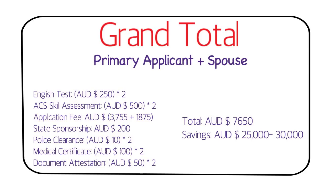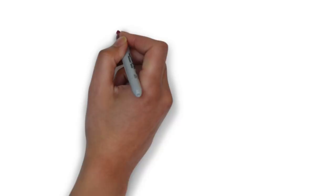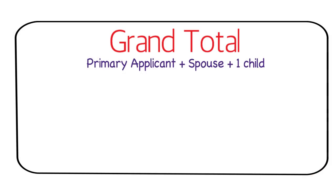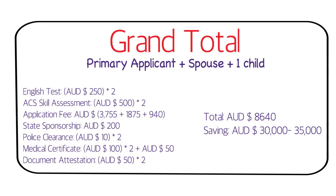If you are a primary applicant migrating with a spouse and one child, you would need to spend around AUD $9,000. The exact calculated figure comes to around AUD $8,640 but roughly it works out to about $9,000 — you should have some buffer. You should have savings of around AUD $30,000 to $40,000 depending on the state.